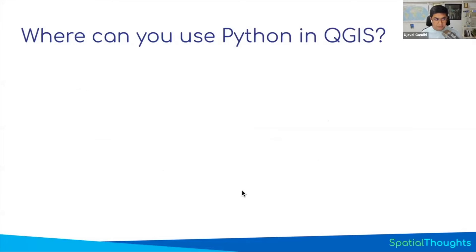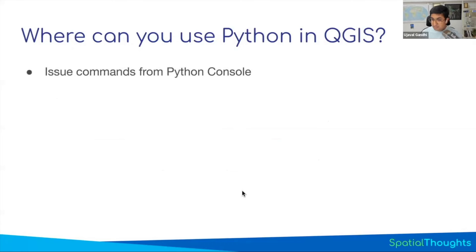We'll look at what you can do with Python and QGIS combined. QGIS comes with a Python console — a way to run Python commands. You can run any Python command within the console, and you can also run PyQGIS commands — that is, Python commands that control QGIS. You can use that for simple automation. For example, if you have 500 layers loaded in QGIS and want to rename all of them, it's quite painful to right-click and rename each one.